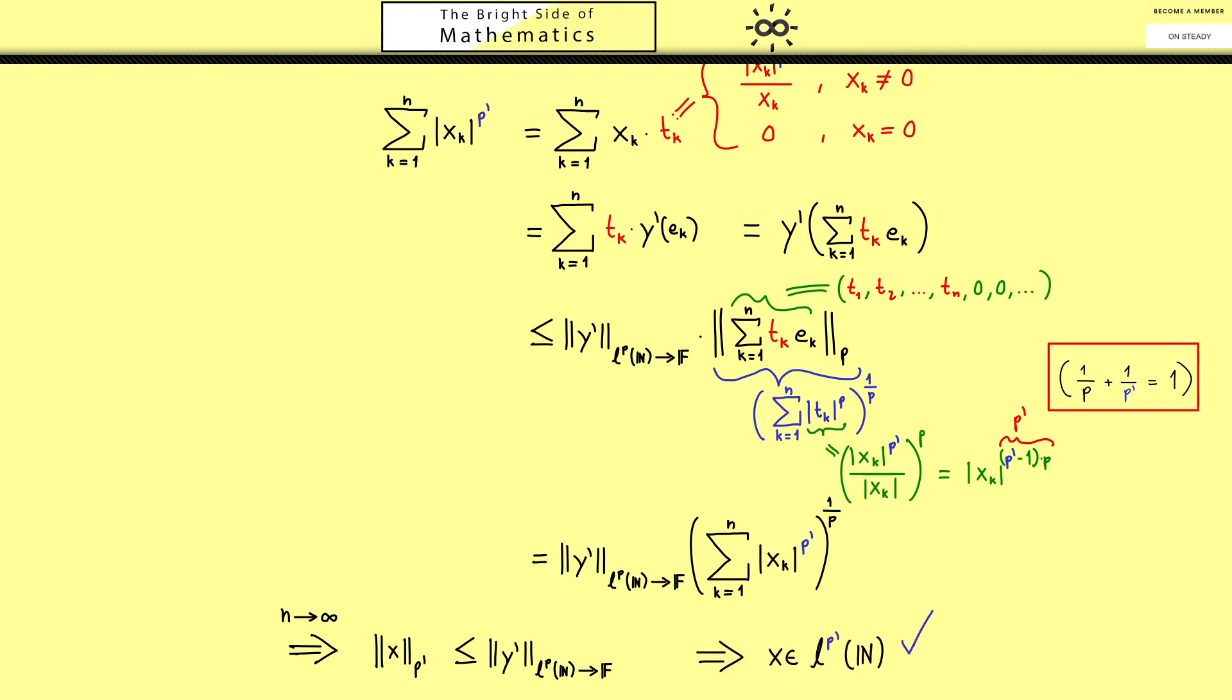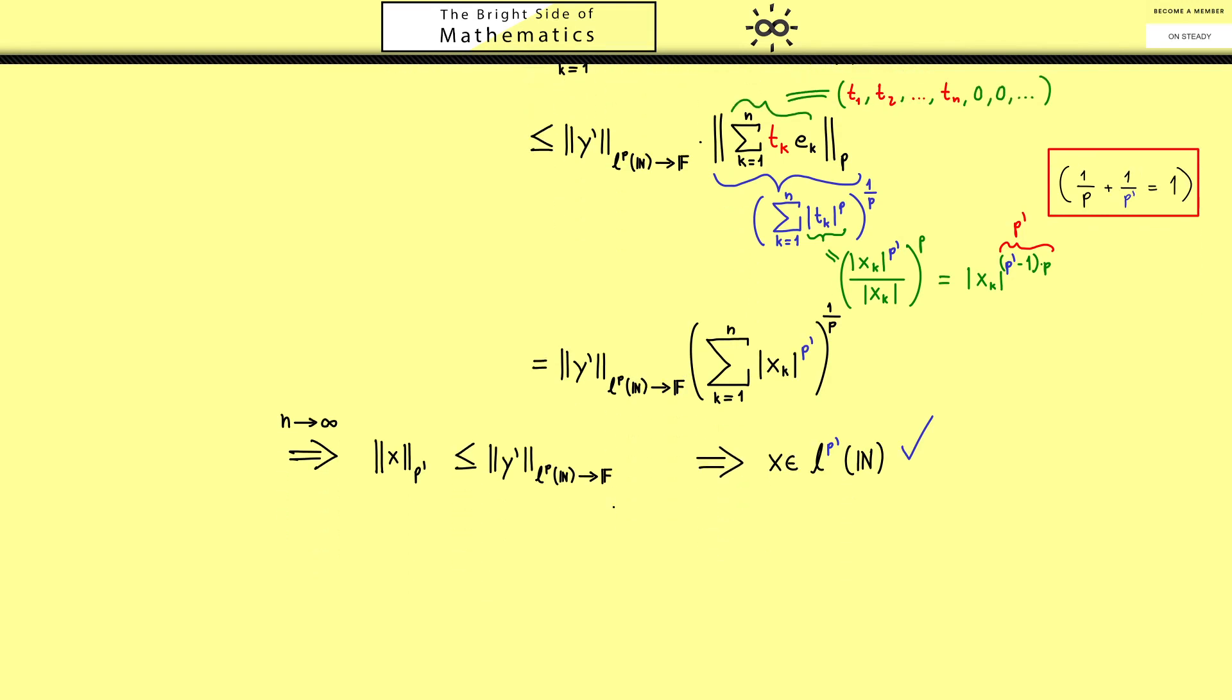And the second question was is Tx the same as y prime? Now please recall both objects are linear functionals defined on LP. Hence we can just look at the difference and put in any vector y from LP. If the outcome is always 0, no matter which y we put in, then we know the functionals are the same. Now we use the fact that each y can be approximated by a linear combination from the ek's from before. It's not hard to check that this always holds so the limit is just y.